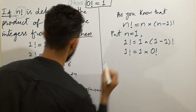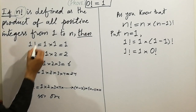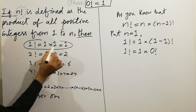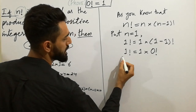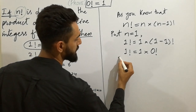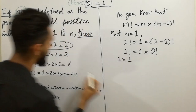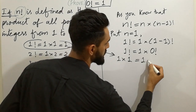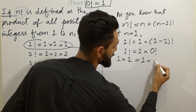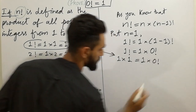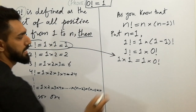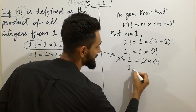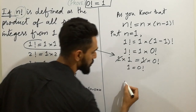Here, 1-factorial — I've already shown that 1-factorial equals 1 cross 1. So we can write here 1 cross 1, and similarly here will be 1 multiplied by 0-factorial. That means 1 is equal to 0-factorial.